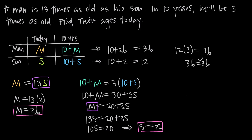We know the values we found for the son's age and the man's age today are a real solution to this system of equations, because the logic holds up for their ages today and for their ages in 10 years.